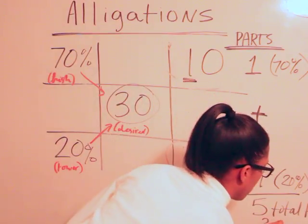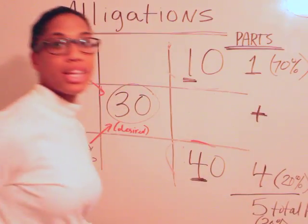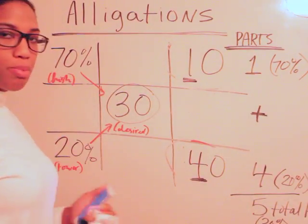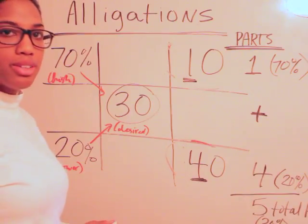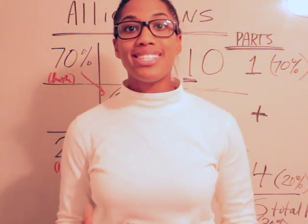Which will be equivalent to what our desire is here, which is 30% alcoholic elixir. And that's how you work an alligation. Really the more you practice it, the better you'll get at it.